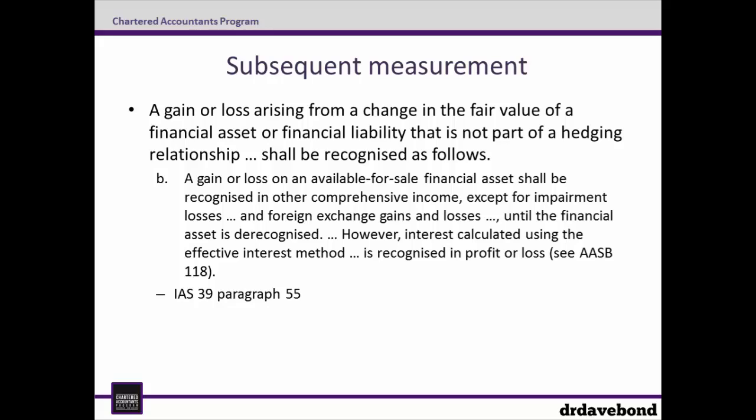IAS 39 paragraph 55 helps us out here. A gain or loss arising from a change in the fair value of a financial asset or financial liability that is not part of a hedging relationship shall be recognized as follows. A gain or loss on an available for sale financial asset shall be recognized in other comprehensive income, except for impairment losses and foreign exchange gains and losses until the financial asset is de-recognized. However, interest calculated using the effective interest method is recognized in profit or loss. This means changes for this instrument go to OCI, and we need to continue to calculate interest using the effective interest method.